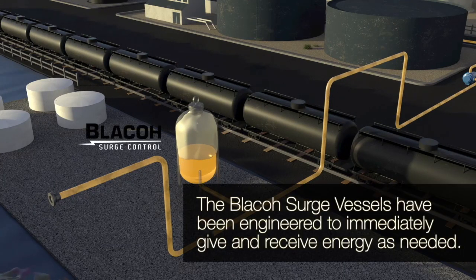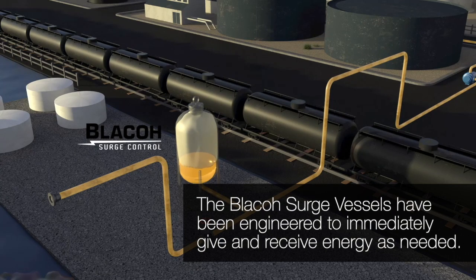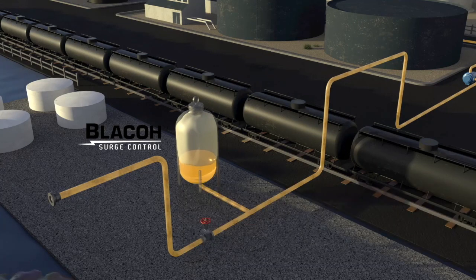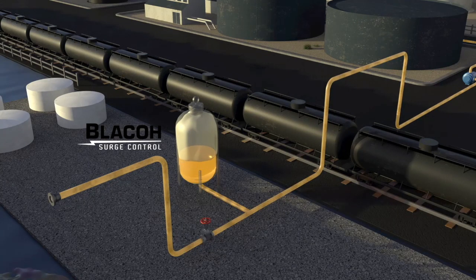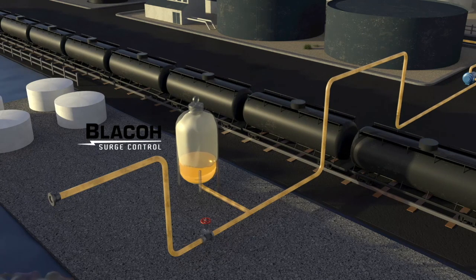The Blago surge vessels have been engineered to immediately give and receive energy as needed. Blago surge vessels are always on, dynamically reacting to surge events throughout the fluid system, protecting equipment and providing superior containment with no loss of fluids.